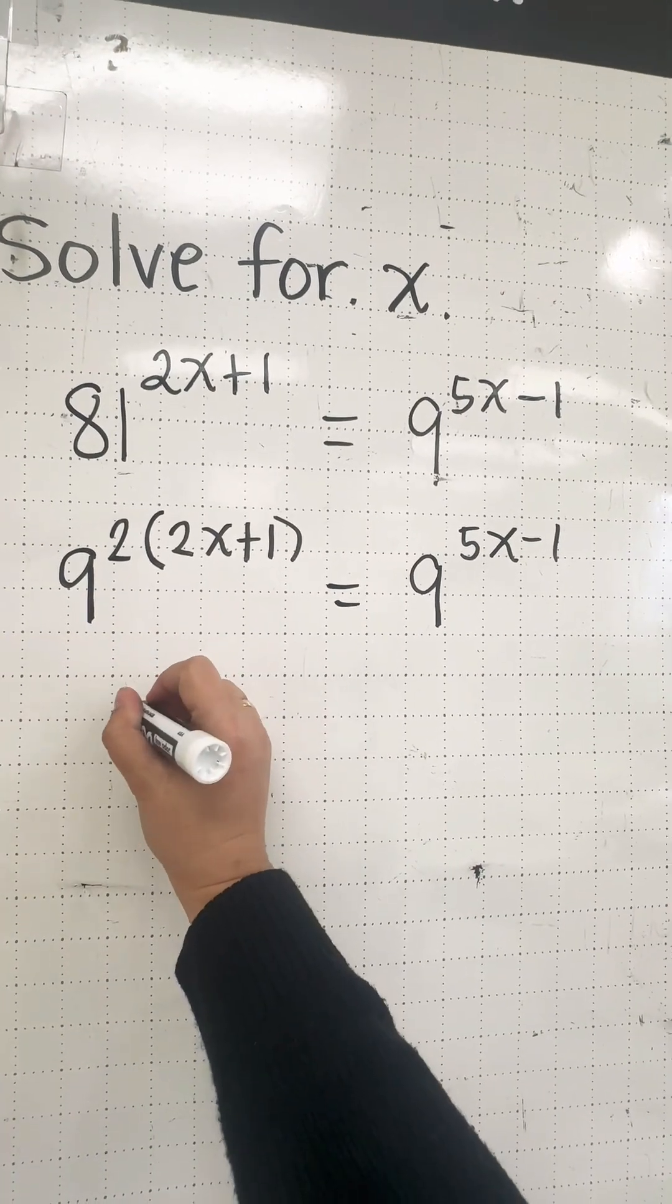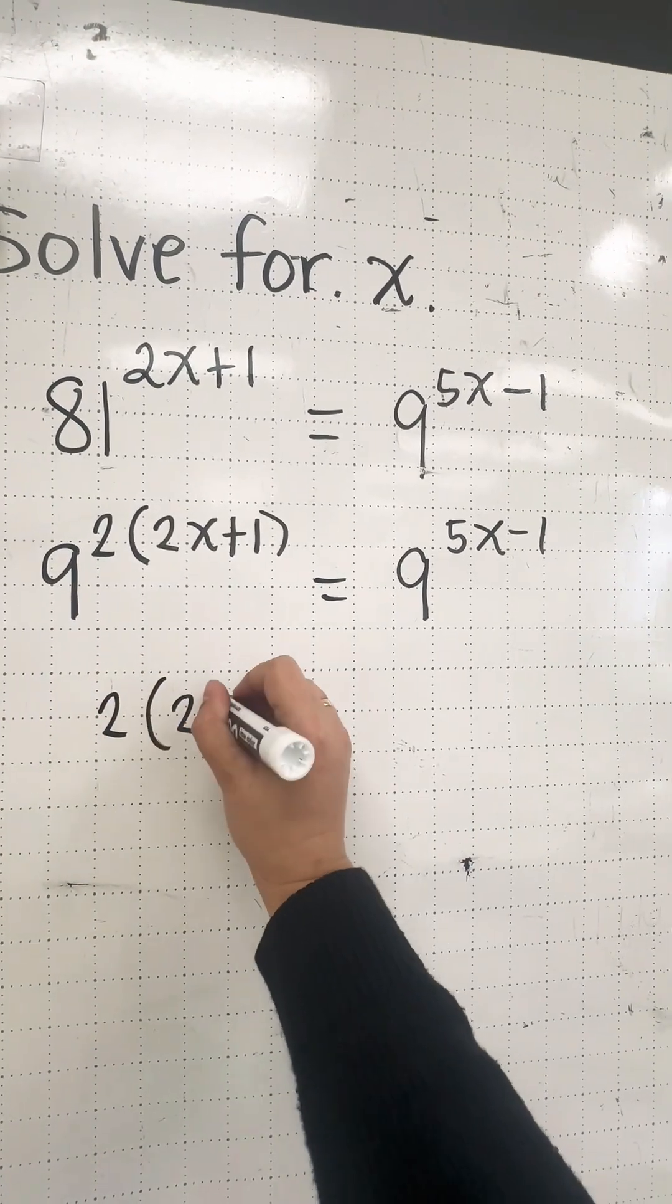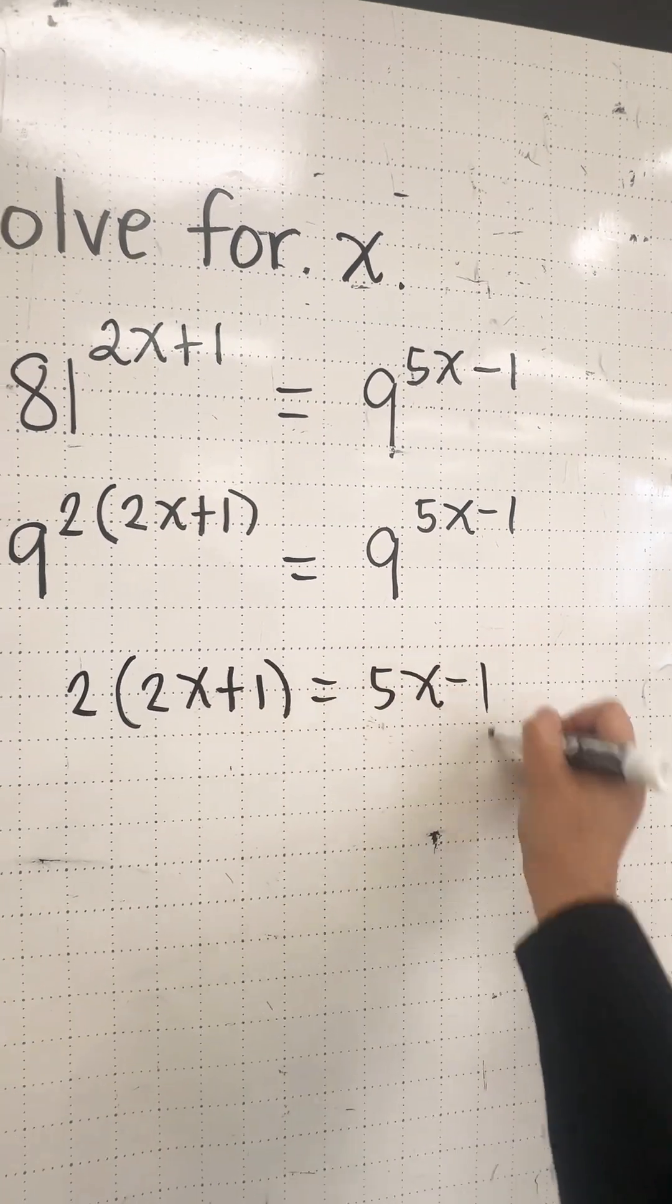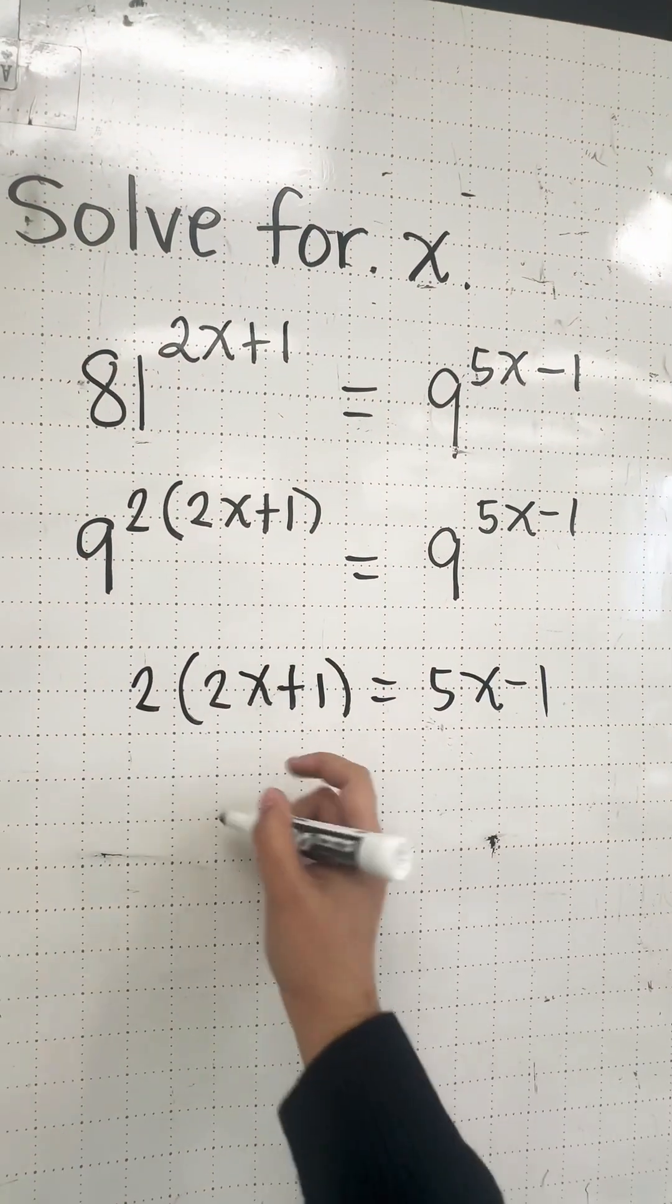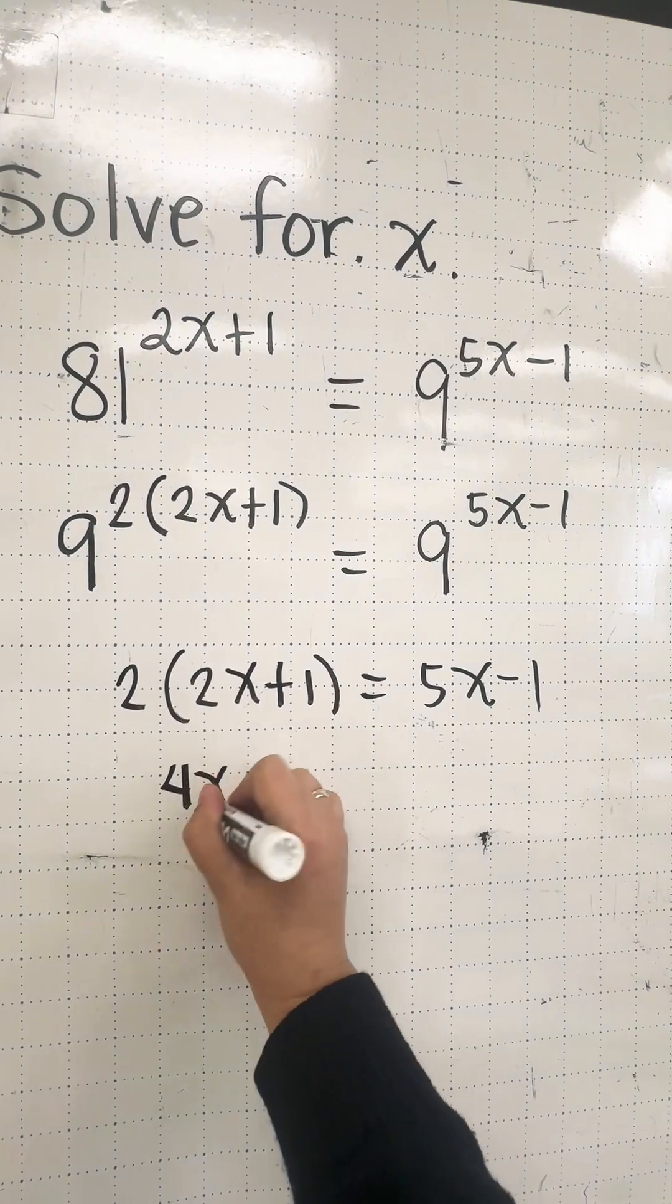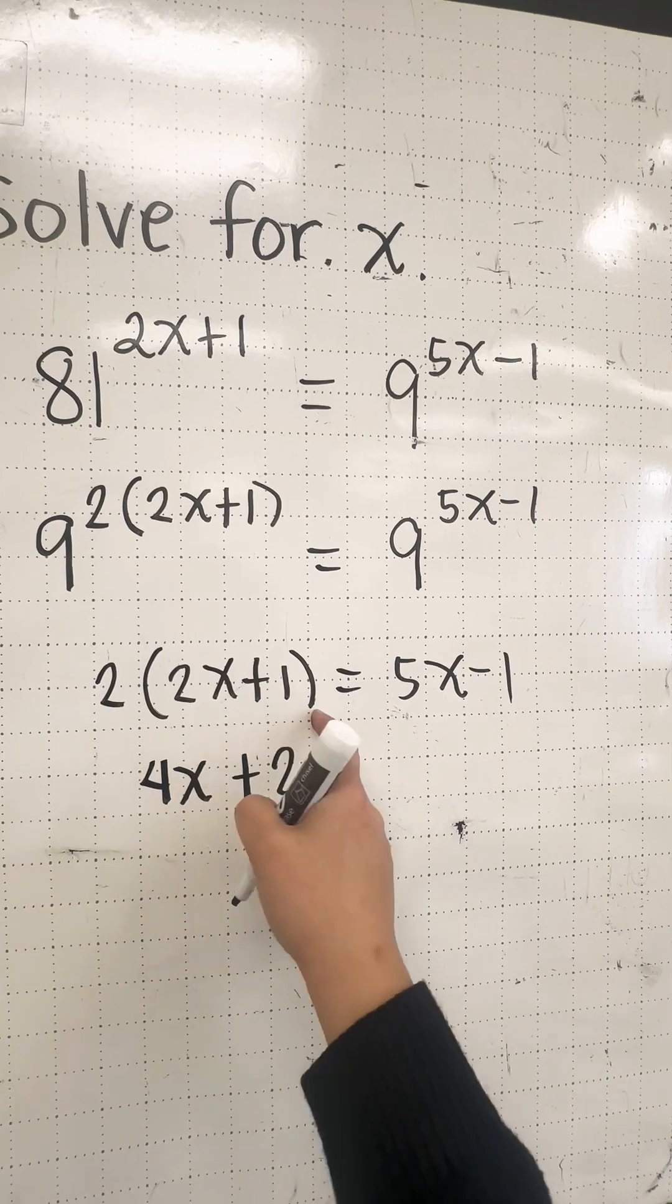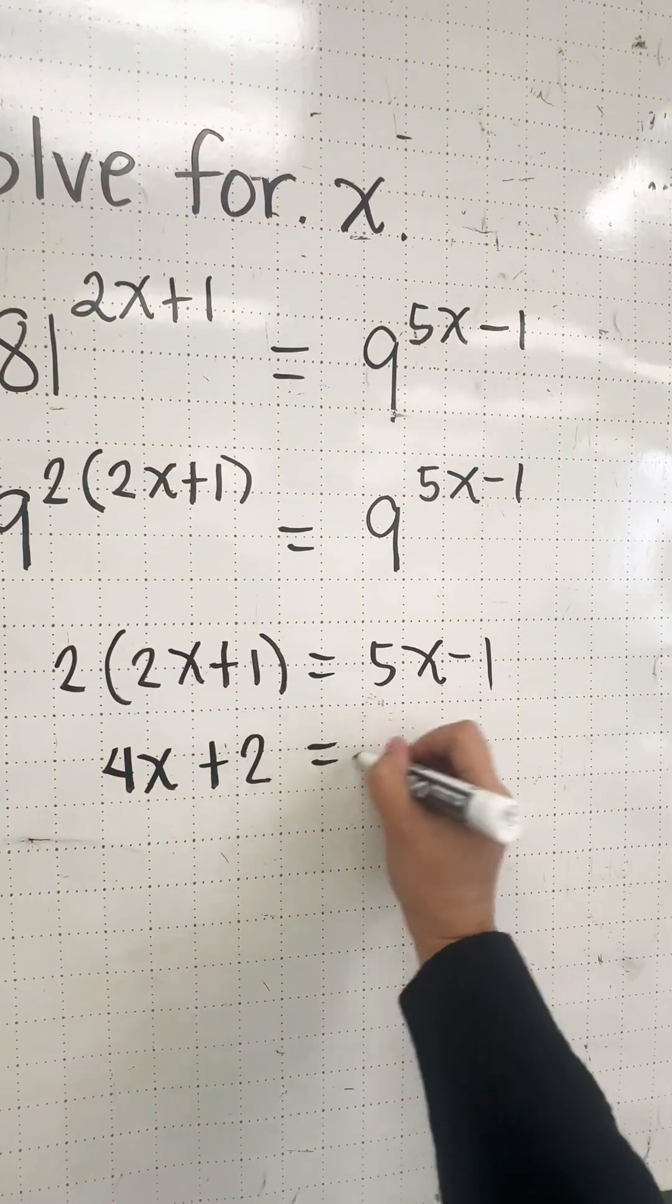Just write down the exponent: 2 times (2x plus 1) equals 5x minus 1. Then let's simplify. This would be 4x plus 2, because you are distributing the 2 to everything inside the parenthesis, equals 5x minus 1.